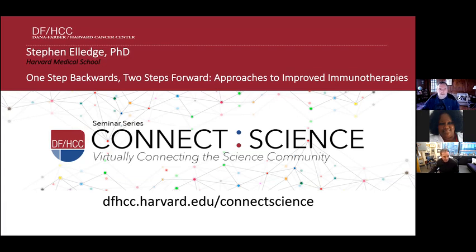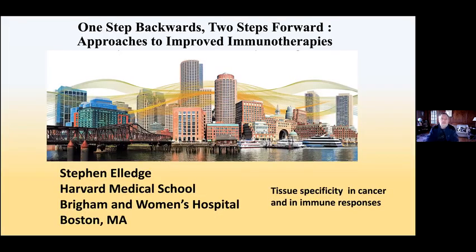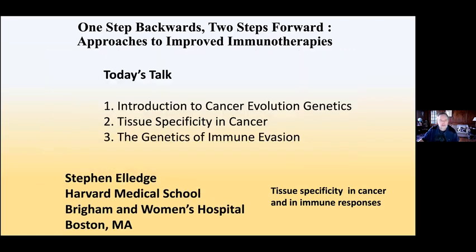Thanks for the introduction. The title of my talk is going to be 'One Step Backwards and Two Steps Forward: Approaches to Improved Immunotherapies.' I hope by the end you'll see why I use that title. My talk is going to be in three parts: first, a general introduction to cancer evolution and genetics; then tissue specificity in cancer; and then the genetics of immune evasion.